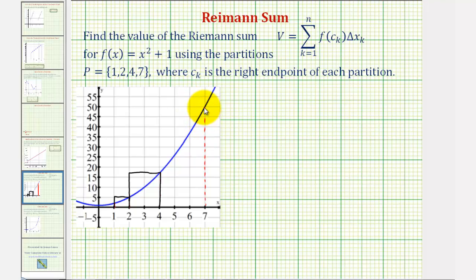The third partition, this would be the height, or the function value, and the width would be three units.